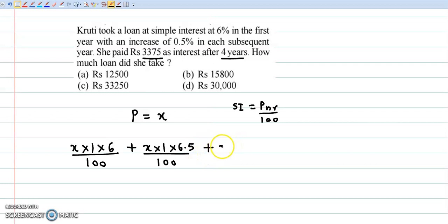Third year, principal is X, N is 1 year. Again 0.5 increase, so rate becomes 7%, so into 7 upon 100. And fourth year, principal is X, time period is 1 year. Again increase of 0.5%, so rate becomes 7.5%, so into 7.5 upon 100. And this 4 years of interest, total interest is 3375.